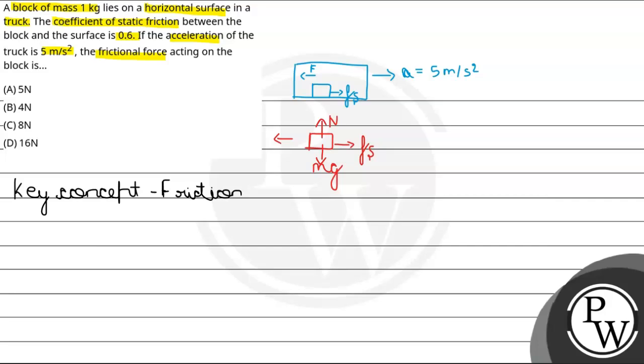So, first we calculate the pseudo force F acting in this direction. So F equals ma. Mass is given as 1 kg. Acceleration is 5 meter per second square. So this comes out to be 5 Newton.